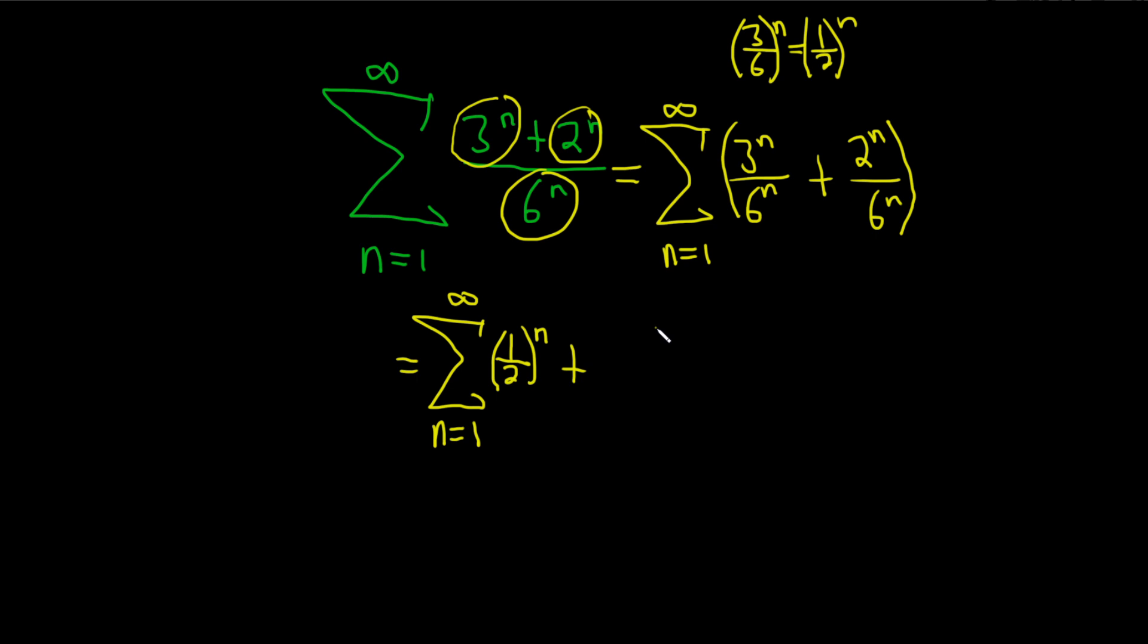So our first sum is the infinite sum of 1 half to the n, plus the infinite sum, as n runs from 1 to infinity. Same thing here, 2 to the n over 6 to the n is really 2 over 6 to the nth power. And so we have 1 third to the nth power. So we can write this as 1 over 3 to the n.